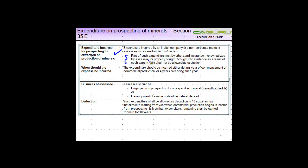The expenses should be incurred either in the year when the commercial production begins or four years prior to that year. Business we know, and the deduction will be allowed in 10 years beginning from the year when the commercial production starts.